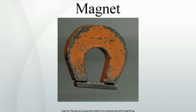Uses for electromagnets include particle accelerators, electric motors, junkyard cranes, and magnetic resonance imaging machines. Some applications involve configurations more complex than a simple magnetic dipole — for example, quadrupole and sextupole magnets are used to focus particle beams.